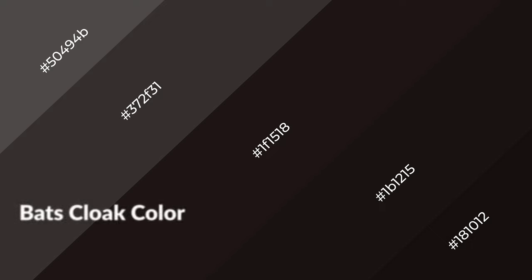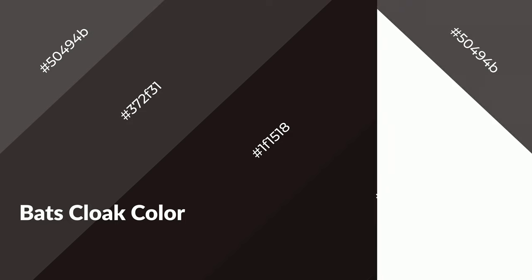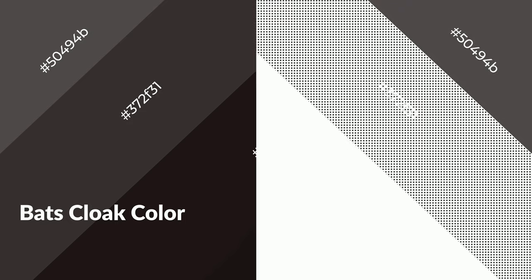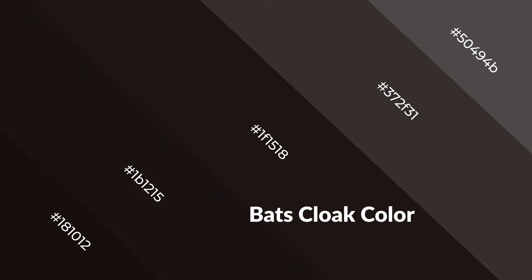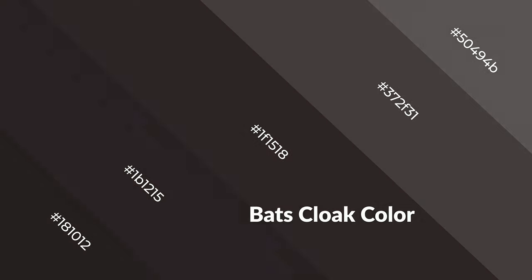Bat's cloak is a warm color and it emits cozier and active emotions. Warm colors are symbols of warmth, fire, heat, and sunshine. It also evokes joy, passion, love, and even anger. You can see them used in restaurants and gyms.